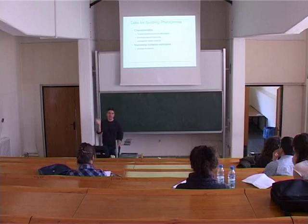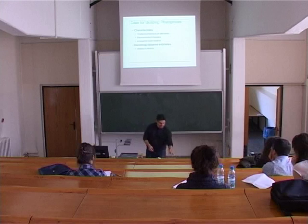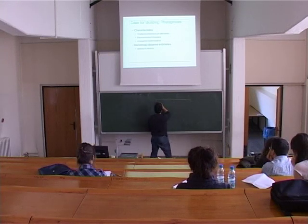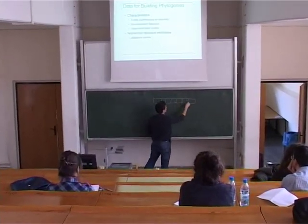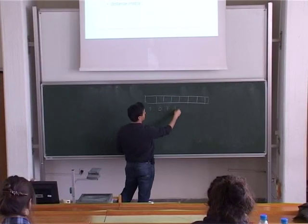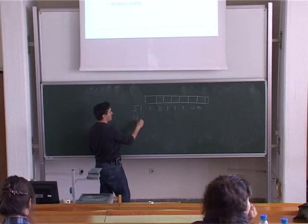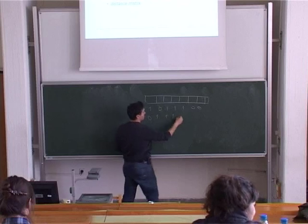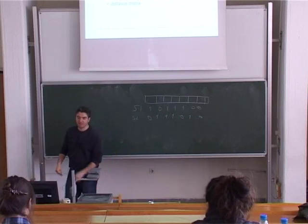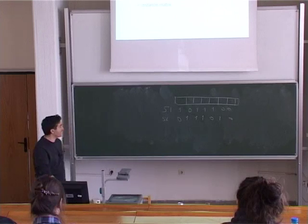If we combine all these characteristics together, what we have is called the character state matrix. For a species, we can have a character vector with several characters. For a species S, we can say this character is present, missing, present, present, present. So for species 1 we have a character state vector, for species 2 we have another. We can have a number of species that build up the character state matrix. There are methods that use such character state matrices to build phylogenetic trees.